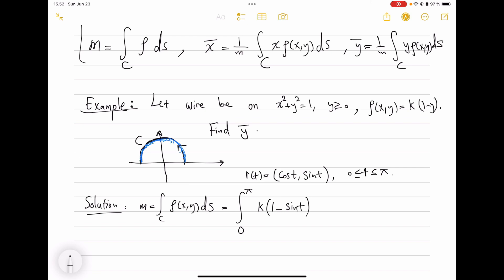Formulas are visible in the screen, so mass will be integrating the density over the whole curve. So the curve—one parameterization we can write for the curve is, and because orientation doesn't matter, we go counterclockwise: (cos t, sin t), where t goes from 0 to π, half circle. And then we have k times (1 - sin t), and then you have the length of r'(t).